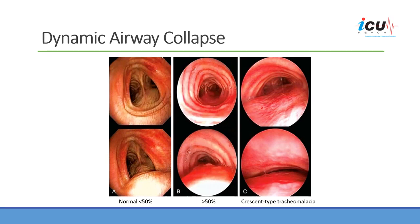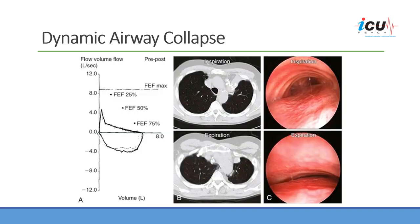In severe dynamic airway collapse, or in crescent type tracheomalacia, airway collapse is caused by weakness of the anterior wall, which leads to airway narrowing during expiration. On the volume-flow loop you can see the sudden drop in expiratory flow followed by a plateau phase, which characterizes the airway collapse.